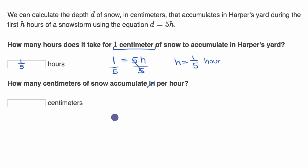Well, there's a couple of ways to think about it. Perhaps the easiest one is to say, what is d when h is equal to one? And so we could just say, d when h is equal to one, when only one hour has elapsed, it's going to be five times one, which is equal to five, and our units for d are in centimeters. So five centimeters.